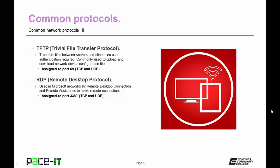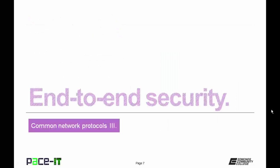Then there is RDP, Remote Desktop Protocol. It's used in Microsoft networks by Remote Desktop Connection and Remote Assistance to make remote connections to desktop systems. It's assigned to port 3389 by default, and it also uses TCP and UDP at layer 4.